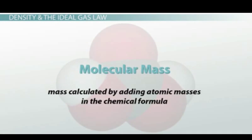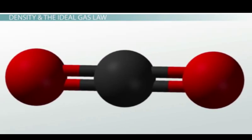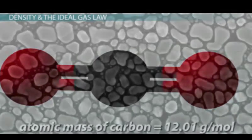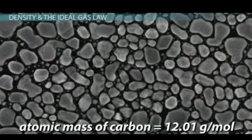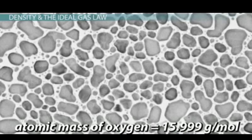Molecular mass is the mass calculated by adding atomic masses in the chemical formula. For instance, CO2 is composed of one carbon and two oxygen atoms. The atomic mass of carbon is 12.01 grams per mole, and oxygen is 15.999 grams per mole.